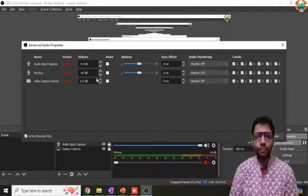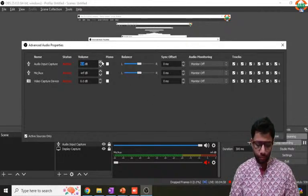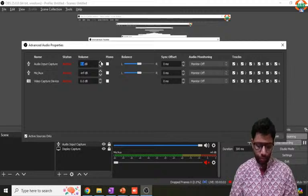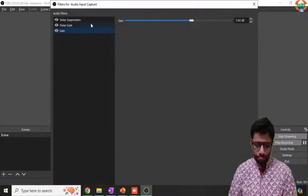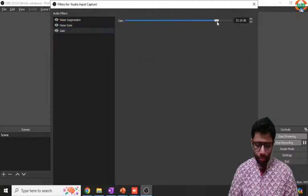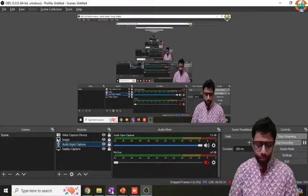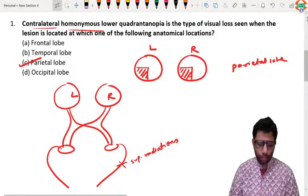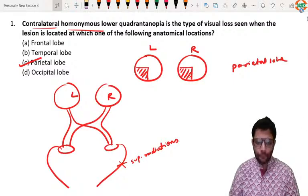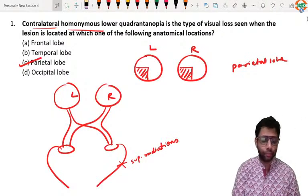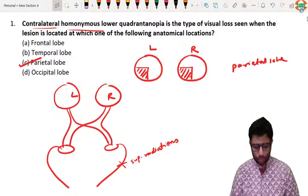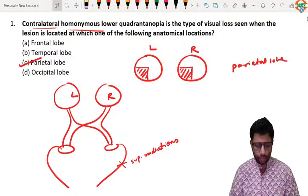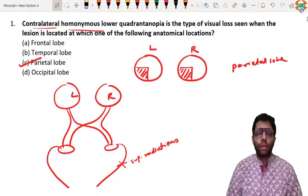So for example, if the right side defect is behind the chiasma, the right temporal fibers are not working. That's why right nasal defect like this. And left nasal fibers are crossing, so left nasal leads to left temporal defects like this. So it is contralateral homonymous lower quadrantanopia that is pie in the sky. That is seen in parietal lobe. All right, I am waiting.